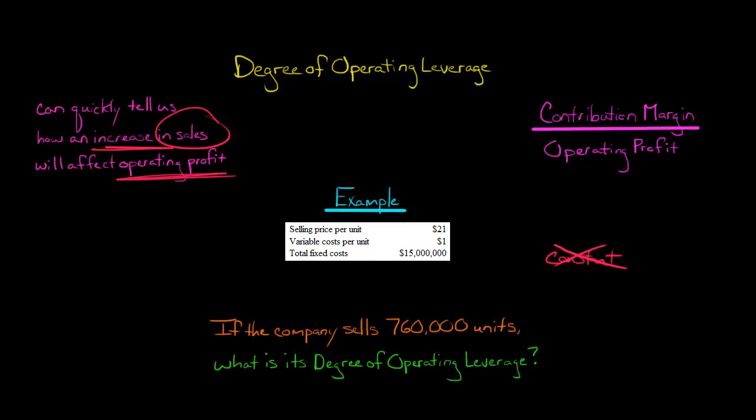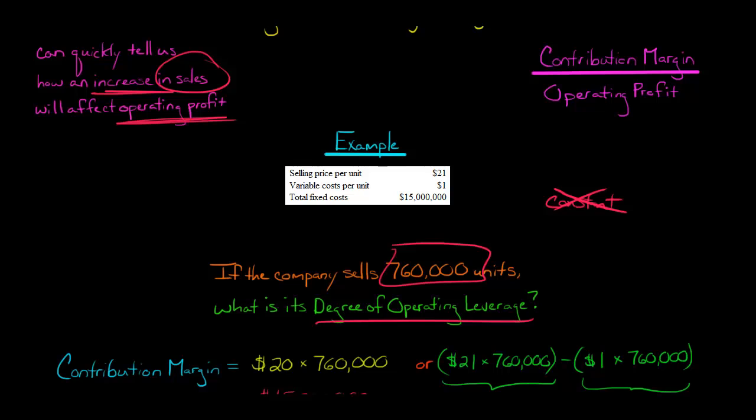So assuming 760,000 units are sold, what is going to be the company's degree of operating leverage? Now you see here, we don't have given contribution margin and operating profit. So we're going to have to calculate those things in order to calculate the DOL. So the contribution margin, our numerator up here, you can do that a couple of ways.